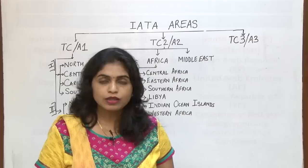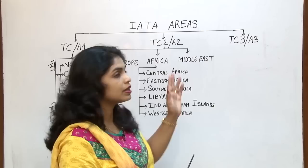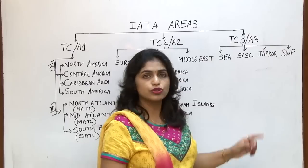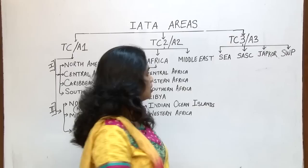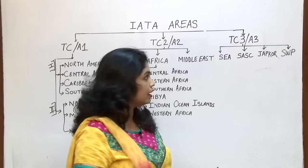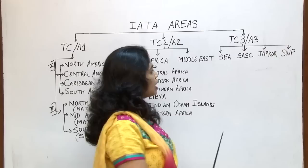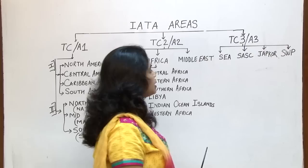Now let us move ahead with traffic conference area 3. TC area 3 gets divided into four zones or sub areas. The first one is Southeast Asia (SEA). The next group of countries is the South Asian subcontinent — roughly speaking, India and its neighbours. Southeast Asia would be the Singapore, Malaysia, Thailand zone.